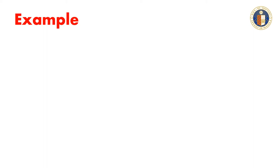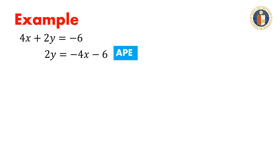Let us consider another example. Suppose we are given the equation 4x plus 2y equals negative 6. Note that this equation is not in slope-intercept form. We need to rewrite the equation in slope-intercept form so that we will be able to determine the slope and y-intercept easily. We apply the addition property of equality followed by the multiplication property of equality.